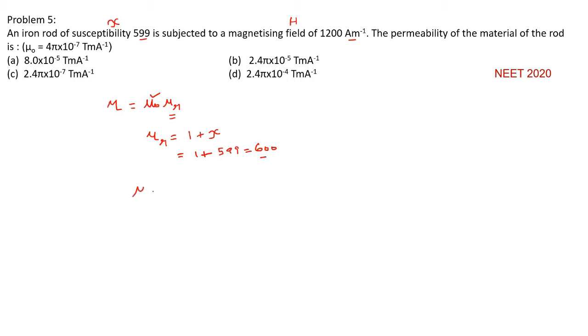So you can find simply mu. Mu0 muR, mu0 4 pi into 10 to the power of minus 7, muR 600.